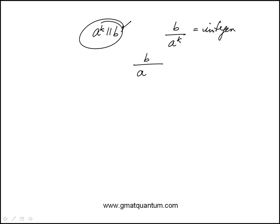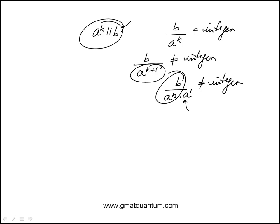But b is not divisible by a to the power of k plus 1, is not an integer. Now essentially you can think of this as really a to the k times a to the 1. That's not an integer, which means that this resulting number is not divisible by a.